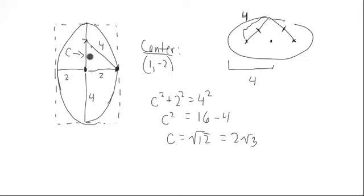So we know, in particular, that our focus will be located 2 root 3 above the center and below the center for our 2 foci. So we have 1 comma negative 2 plus or minus 2 root 3, and those are the 2 foci.